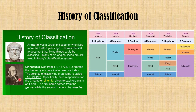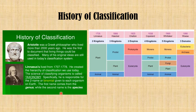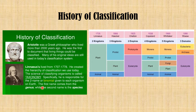This man is called Carolus Linnaeus, or Carl Linnaeus, who lived from 1707 to 1778. He created the hierarchy of classification we use today and is usually termed the father of taxonomy. Specifically, he is responsible for the two-name system, or the binomial system, given to each organism on Earth. The first name comes from the genus, while the second name is the species.